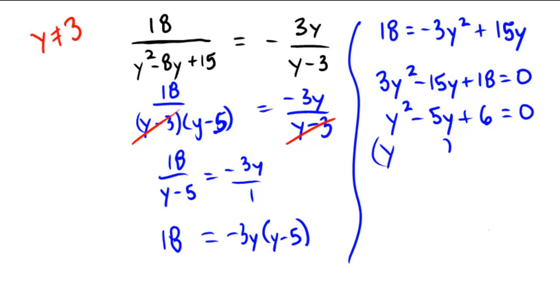And so now we can factor it by thinking of what numbers multiply to 6 and add to negative 5, which would be y minus 2 and y minus 3.